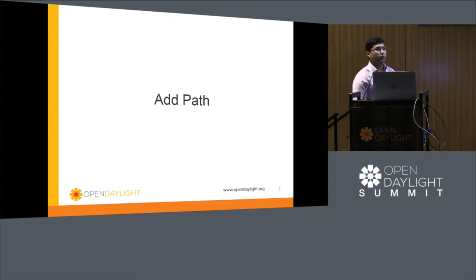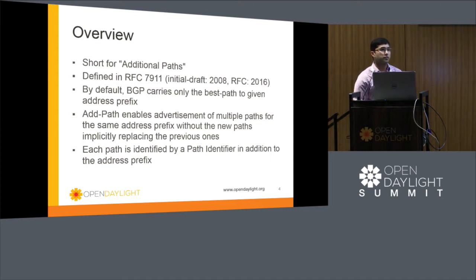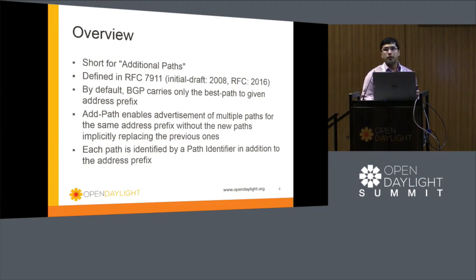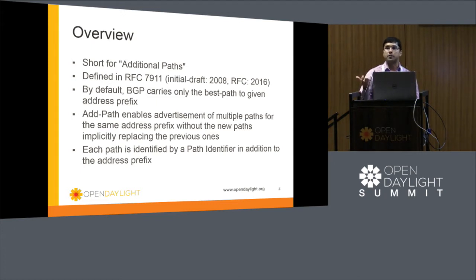We have only 25 minutes for this session, so we'll try to go faster. Please hold your questions for the end. The first IETF standard now supported in Boron is called ADPATH, defined in RFC 7911. The initial draft came in 2008 and was converted to an official standard only this year. ADPATH is short for additional paths. By default, BGP can carry and advertise only the best path for any given destination. The ADPATH feature enables advertisement of multiple paths for a given destination, with a new path not implicitly overwriting the previous path.